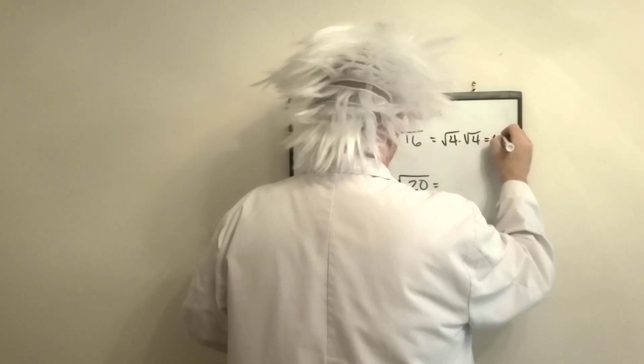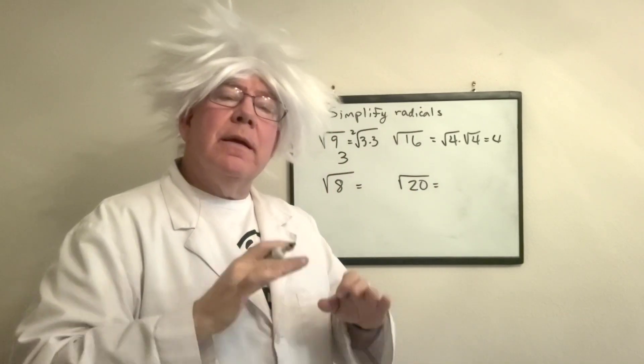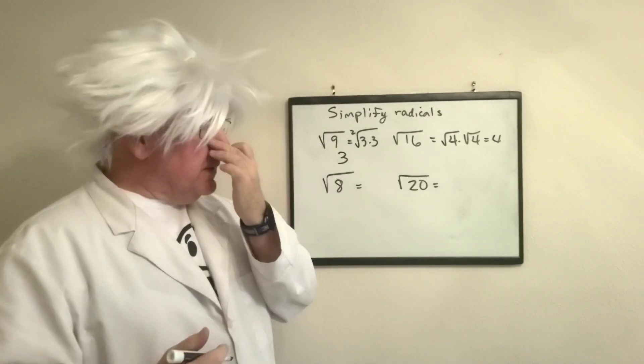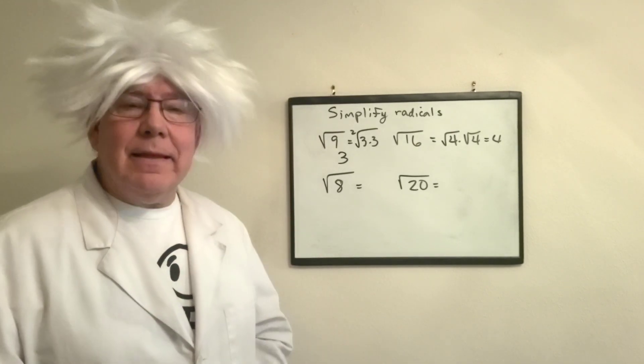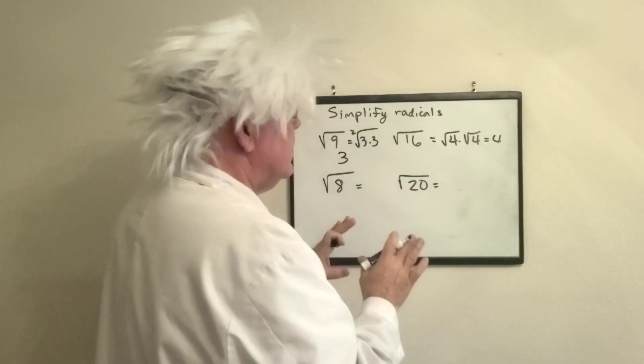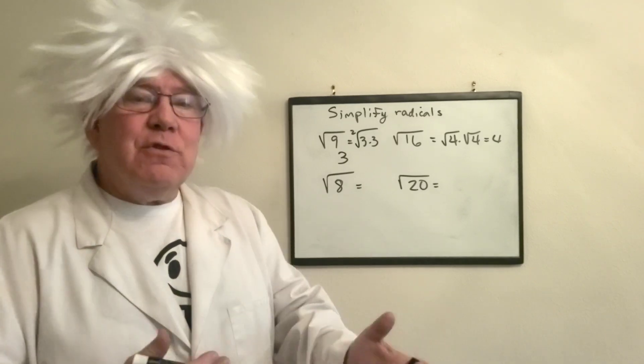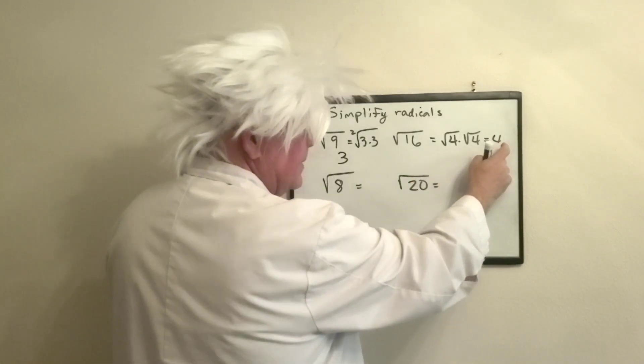Now if you notice, I've done it two different ways. Either way is okay. But now we're going to look at the square root of eight. There is nothing that multiplies to give you the square root of eight, so what we're going to do is look at what perfect square is inside eight that leaves you with a whole number.